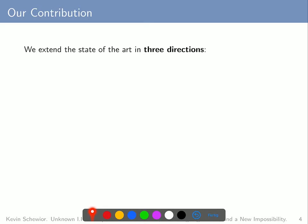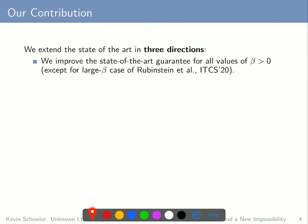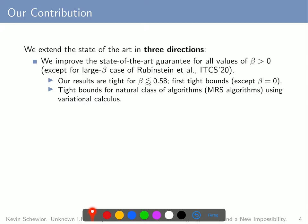With this background in mind, we can understand the contributions of this paper. The first contribution is an improvement of the state-of-the-art guarantee for all values of beta larger than 0, again excluding the large-beta case of Rubinstein and others from ITCS 2020. Remarkably, our results are tight for all values of beta between 0 and roughly 0.58. So except for beta equals 0, we thereby obtain the first tight bounds.